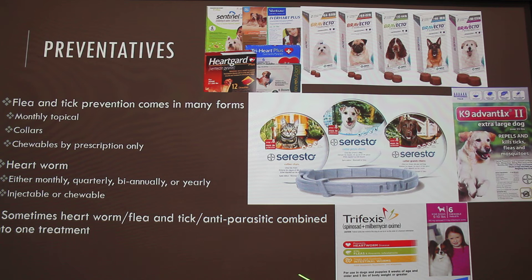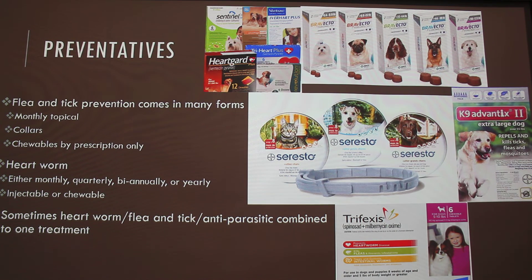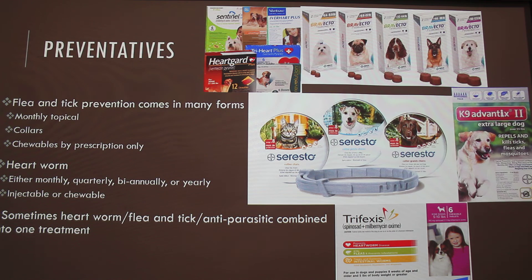Trifexis is also available — it's an all-in-one heartworm preventative, flea and tick preventative, and internal parasite preventative. A lot of the heartworm chewables also protect against internal parasites. Trifexis handles fleas but not ticks, so you may still need something additional for ticks. You wouldn't overdose the dog by adding something like Advantix on top of it. There are lots of different preventatives and different ways to combine them.